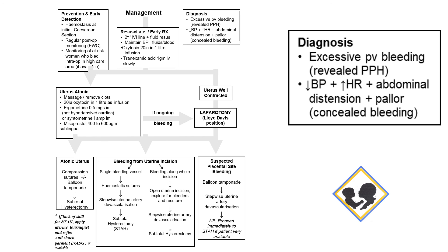Early diagnosis of postpartum hemorrhage is vital. Remember that two-thirds of bleeding deaths occur after caesar, not during. Within the algorithm, the diagnosis is made by excessive PV bleeding — which is relatively easy to detect — but also a decrease in blood pressure and an increase in the heart rate. That inversion where the blood pressure is dropping and the heart rate is going up, especially combined with clinical signs, is something to take very seriously.